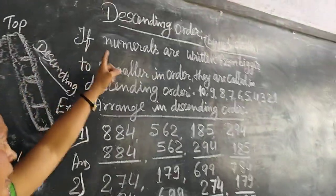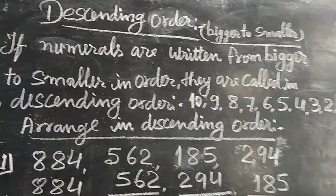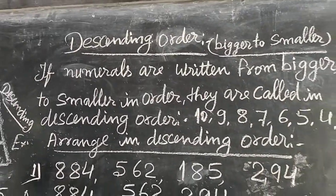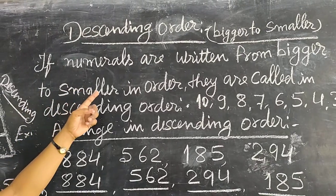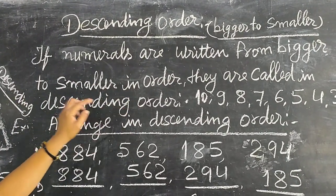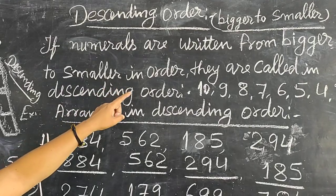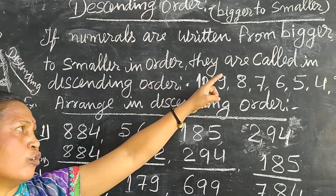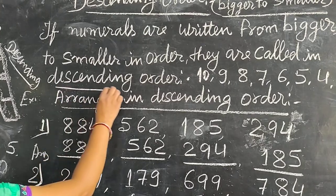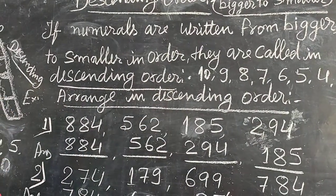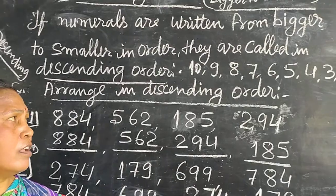Next, descending order. Descending order is bigger to smallest. If numbers are written from bigger to smaller in order, they are all in descending order.